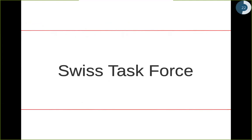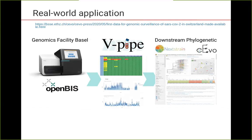Here are some examples of how vPipe is used in the real world. We are currently performing sequence analysis as part of the Swiss sequencing project. Samples gathered from the Viollier laboratory in Basel — coming from all over Switzerland, tested positive — are brought to the genomics facility in Basel, sequenced on an Illumina MiSeq machine, and the data is made available on their OpenBIS platform. vPipe automatically gathers the data, performs analysis and quality checks, and then part of the data — such as consensus sequences — are uploaded to GISAID, enabling downstream analysis by NextStrain and computational evolution groups.